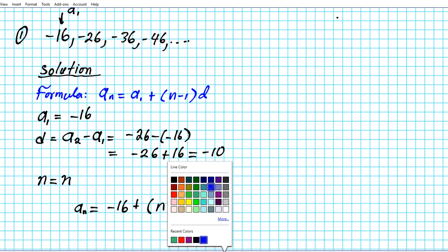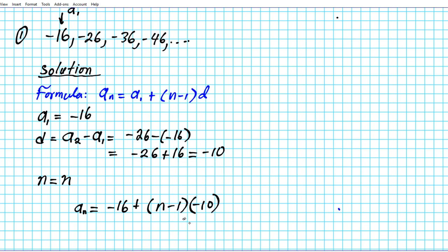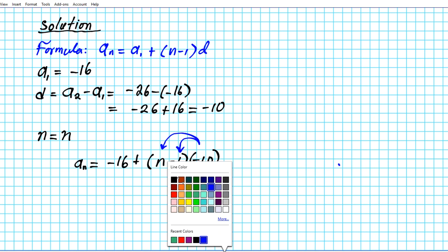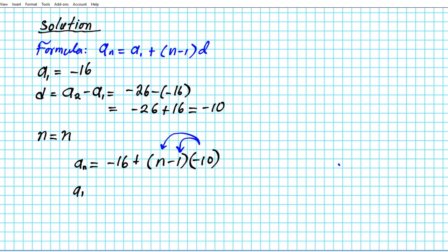Now how do we go about simplifying this equation? We have a quantity here with a number on the outside, so we can distribute this negative 10 across these two terms. That gives us aₙ equals negative 16 plus—if I times negative 10 by n that's going to give me minus 10n, and then minus one times minus 10 is plus 10.